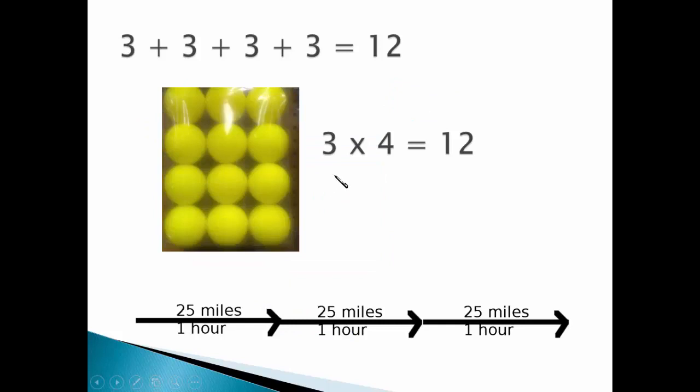We can also use multiplication to find our whole. Four rows of three golf balls is 12 golf balls. Riding at 25 miles per hour for three hours will get us 75 miles.